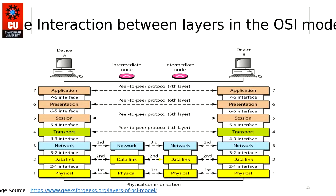In the last lecture we were discussing the OSI model and its different layers — a quick review. The OSI model is just a theoretical model. It has several layers where each layer has its own role and responsibility: Application, Presentation, Session, Transport, Network, Data Link, and Physical layer.